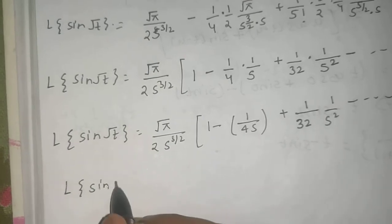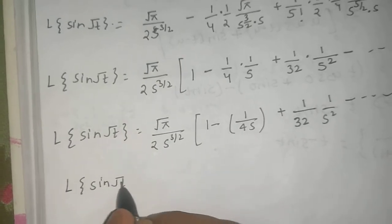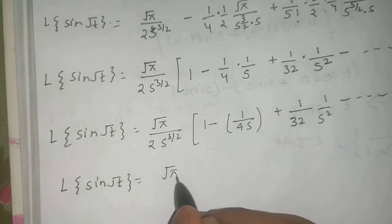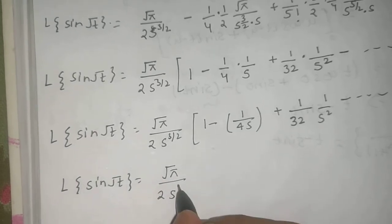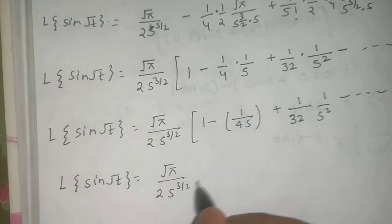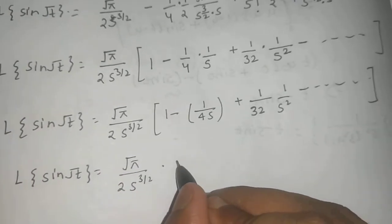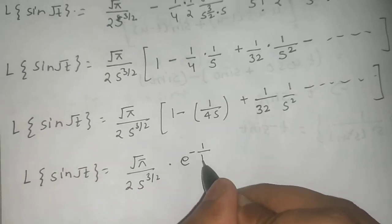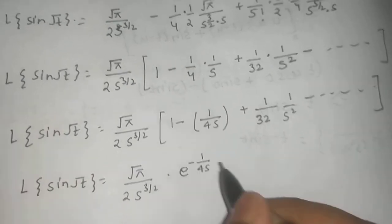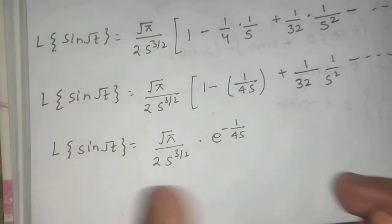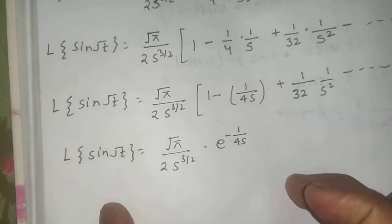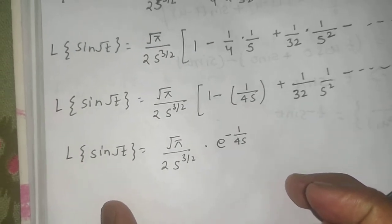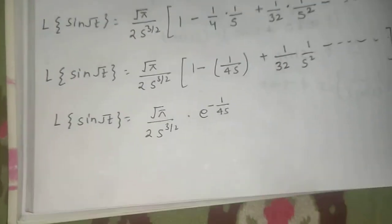Therefore the Laplace of sin(√t) equals √π / (2s^(3/2)) · e^(−1/(4s)). That completes the first part of the question.